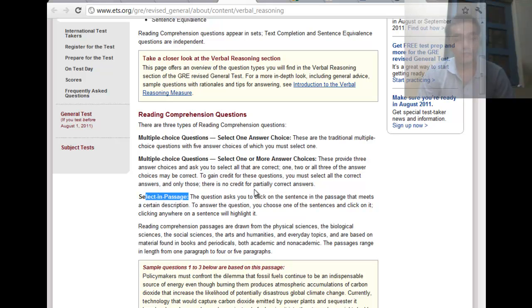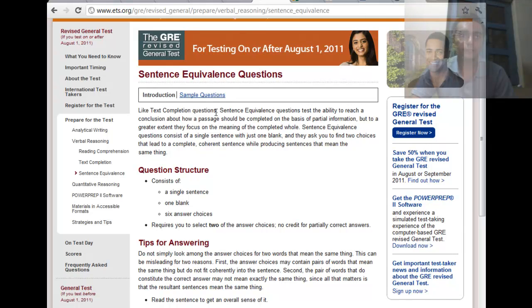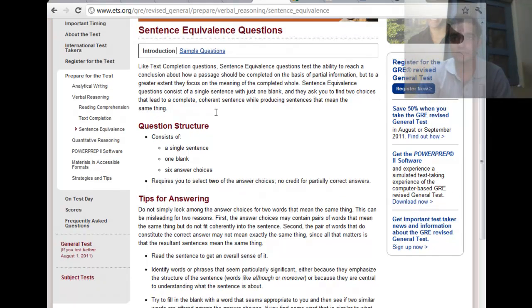We are going to look at all those cases and strategy set for the multiple choice question with more than one choice correct. Then we have the select in passages where you have to select in the things that the passages and point out where that specific part is given. So these are the three types of question in the reading comprehension. You can just go to ets.org and check this out. And the third type of question is the sentence equivalence question.